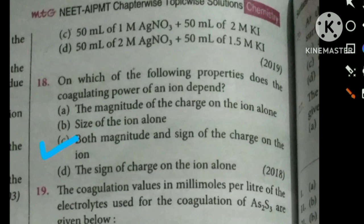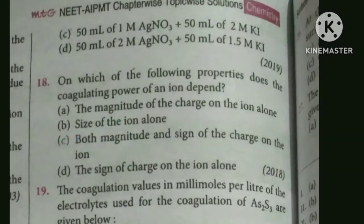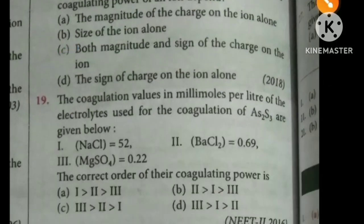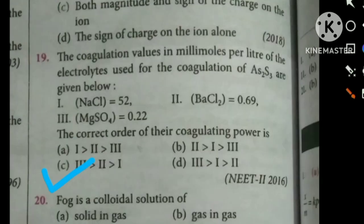The coagulation value in millimoles per liter of electrolyte used for coagulation of As₂S₃ sol: the lower the coagulation value, the higher the coagulating power. The highest coagulating power is shown by MgSO₄, which is option C.